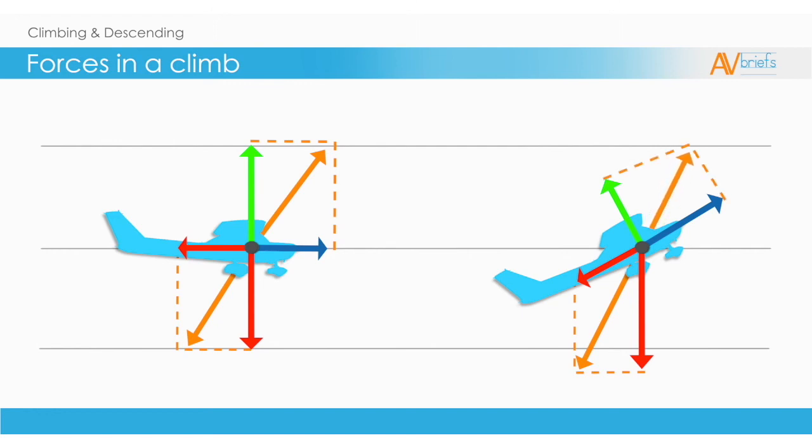Look what happens now to the thrust-lift vector. The lift is tilted rearward. Just like in the induced drag scenario, we saw the lift tilt rearward and create induced drag. This has the same effect, but it also reduces the lift available for staying level, let alone making the airplane climb.